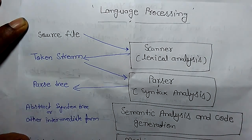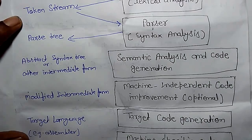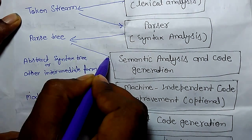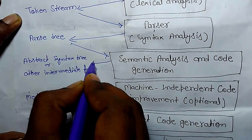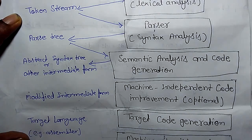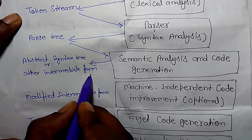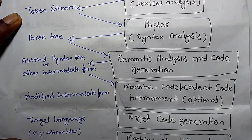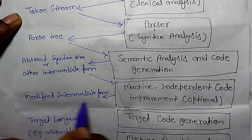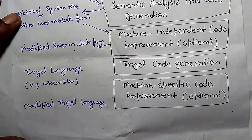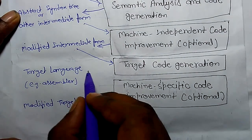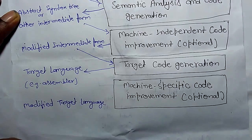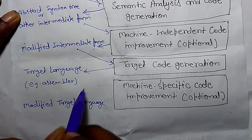The parse tree we feed into semantic analysis and code generator as input and it generates intermediate form of that parse tree or syntax tree. This syntax tree we put as input for machine independent code improvement and it generates modified intermediate form.